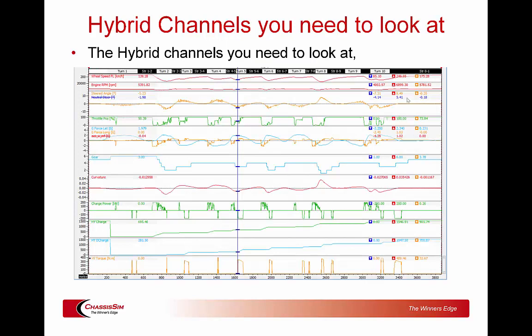In terms of the channels in the simulated data you need to look at: I did a quick LMP-type hybrid simulation around the circuit, and the channels you really want to pay attention to when looking at how your hybrid system is performing are the bottom four. We've got charge power — that tells you the amount of energy you're using — as well as hybrid charge and hybrid discharge. The hybrid charge is a very important channel: when you specify an energy limit, it tells you how much you've been able to harvest per lap.